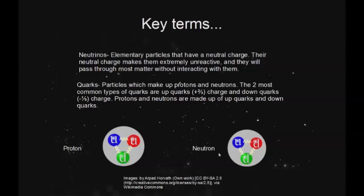Similarly, you can see that a neutron is made up of one up quark and two down quarks. If you add the charges together — two-thirds, minus one-third, minus one-third — you get zero. So now you can see why neutrons have zero charge.